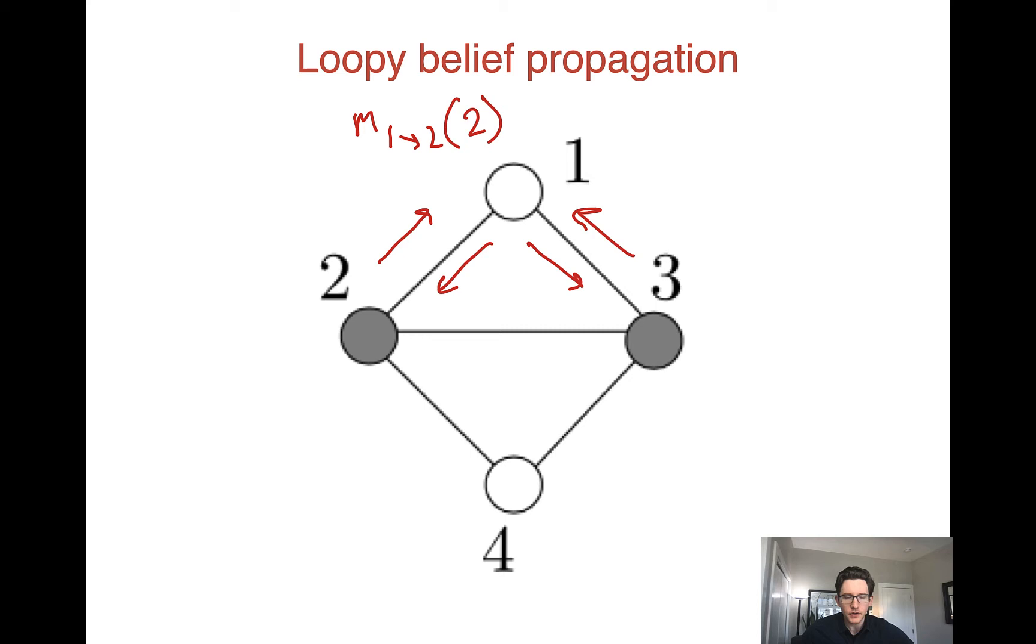Now we're going to do that same thing we did for belief propagation, and we're going to use it to compute our messages in some arbitrary order over the nodes. So, for example, if we start with node one, we're going to compute the messages from node one to the other nodes. So we're going to compute this message and this message using exactly that same formula we defined before. Note that when we're sending a message to three, we're not going to use the message that we have coming from three. That was the same as we did in normal belief propagation.